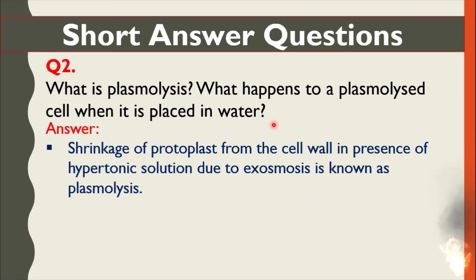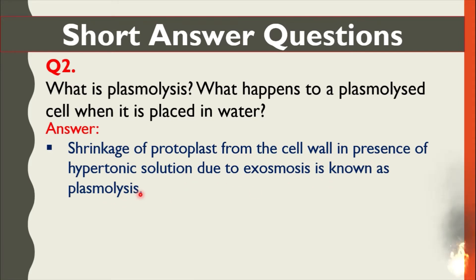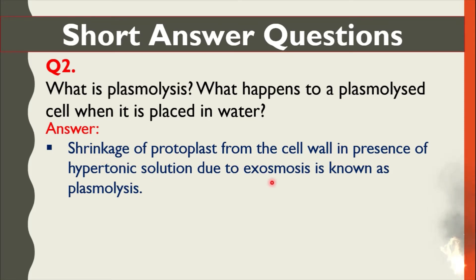What is plasmolysis? Shrinkage of the protoplast from the cell wall in the presence of a hypertonic solution due to exosmosis is known as plasmolysis. Shrinkage is related to the hypertonic condition of the solution. When water moves out of the cell — that is, exosmosis — the process of plasmolysis occurs.